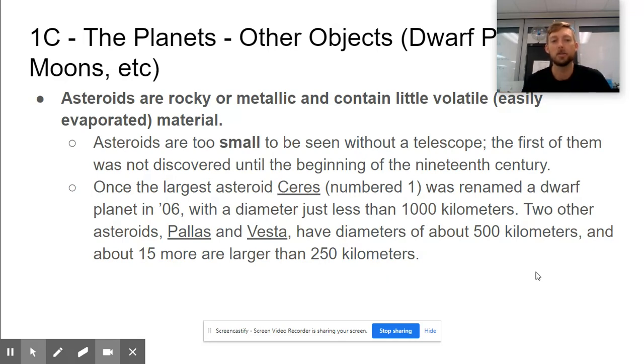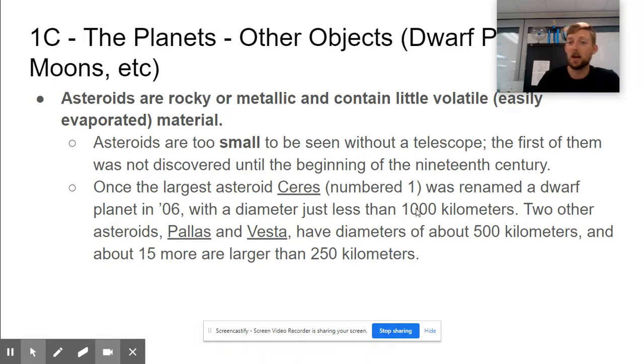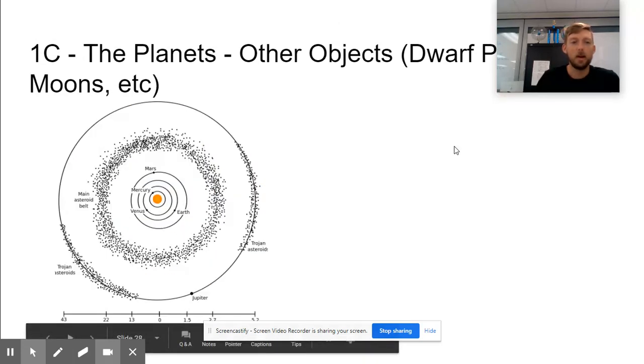There are two other asteroids that are also pretty big: Pallas and Vesta, with diameters about 500 kilometers. There are 15 more larger than 250 kilometers, but besides that it's all smaller stuff. Again, kilometers is really big—we're not talking about tiny chunks of rock like a baseball. A thousand kilometers is still a massive chunk of rock and metal.